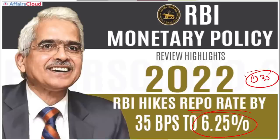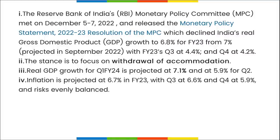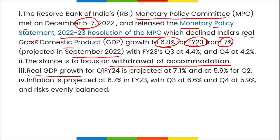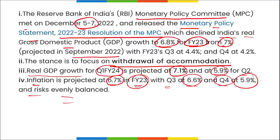The reverse repo rate is the interest offered by RBI to banks that deposit funds with it. RBI's MPC resolution projected India's real GDP growth rate at 6.8% for FY23, down from the 7% projected in September 2022. The GDP growth for Q1 FY24 is projected at 7.1% and 5.9% for Q2. Inflation is projected at 6.7% for FY23, with Q3 at 6.6% and Q4 at 5.9%.